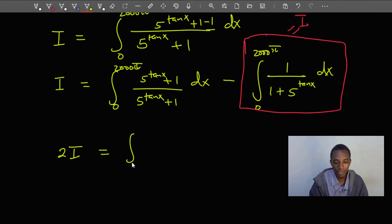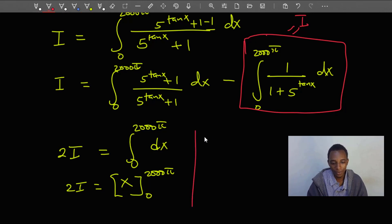I move that to the left-hand side, so I'll have twice that integral. Twice I equals the integral from 0 to 2000π, and basically here I just have dx. So 2I equals x evaluated from 0 to 2000π.